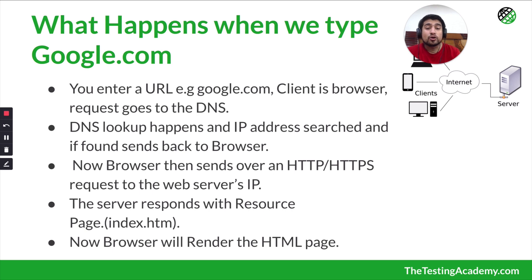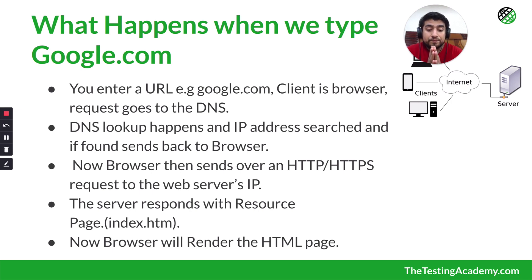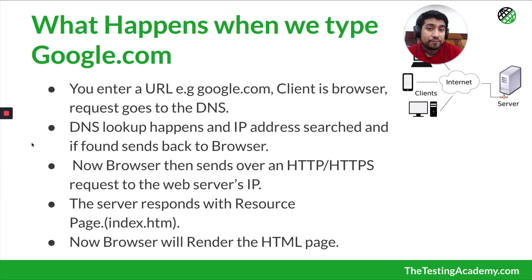Now let's talk about the important question: what happens when you type google.com into your client browser, for example Chrome? The first thing that happens is a DNS lookup. DNS lookup is basically because you have a domain name — and a domain name is nothing but a fancy name for a particular address.